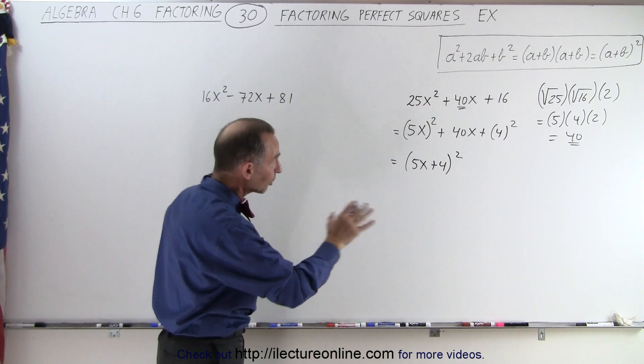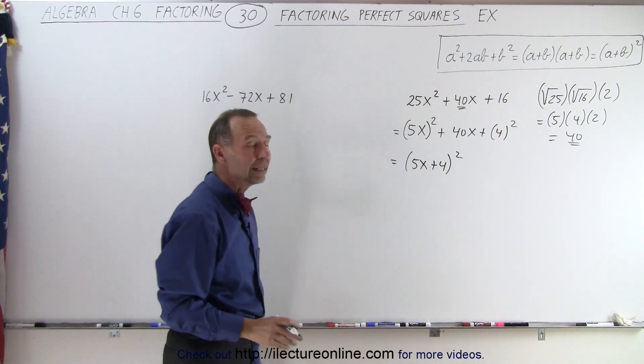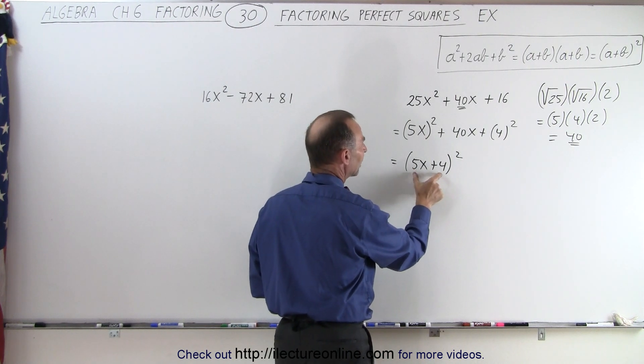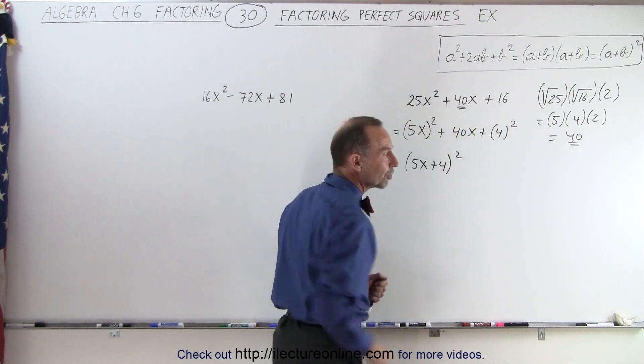If you're not sure, go ahead and multiply it out and you will get the initial term. One way to think of it is multiply 5 times 4, which is 20, times 2. If you get the middle term, you're good to go.